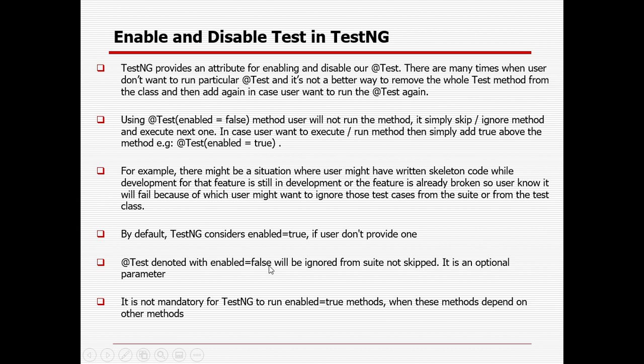That's why enabling and disabling a test plays an important role. By default, TestNG considers enabled=true if the user does not provide one. If you are not providing anything, it takes the default value as true. A @Test annotated with enabled=false will be ignored — not skipped. Skipping is different; skipping means skipping a particular test step, but with enabled=false it will be ignored. It is not mandatory for TestNG to run an enabled=true method when that method depends on another method, because if the dependent method is set to false it will create problems.